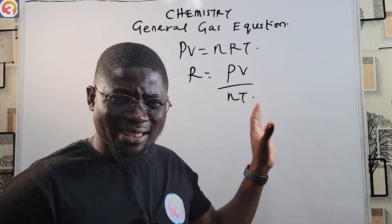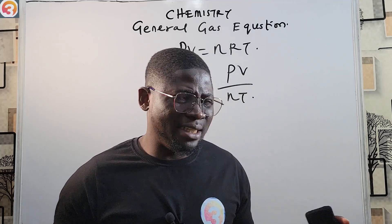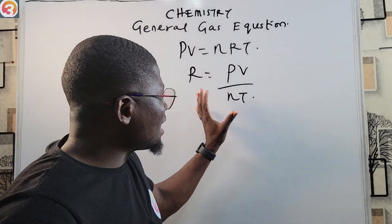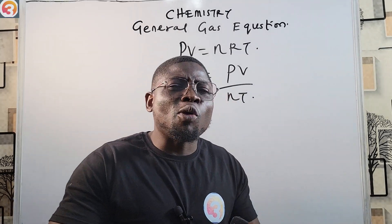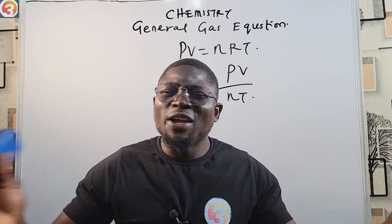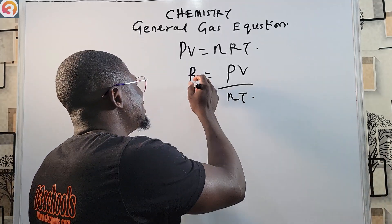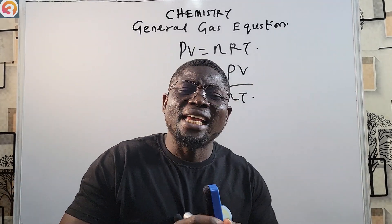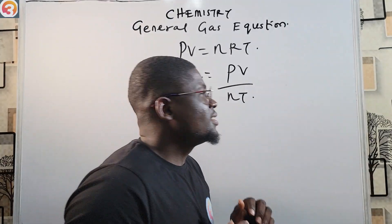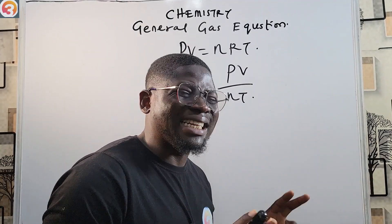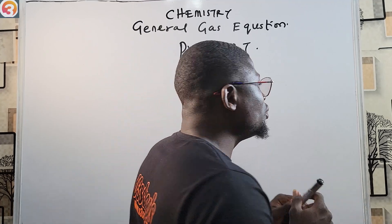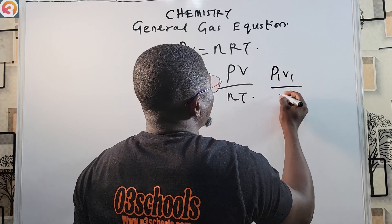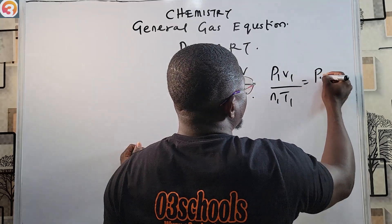This means that the ratio PV over nT will be constant at any time. The ratio of PV over nT that is constant at a particular time will always be constant at any other time, because R is a constant. So long as R remains a constant, PV over nT will remain a constant.